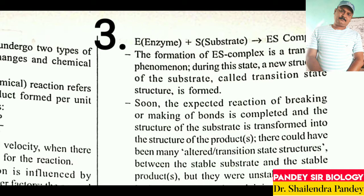When the enzyme-substrate complex forms, the enzymatic action starts. The enzyme-substrate complex is a transient phenomenon. During this state, a new structure of the substrate called the transition state structure is formed. Soon the expected reactions of breaking or making of bonds are completed and the structure of the substrate is transformed into the structure of the product.